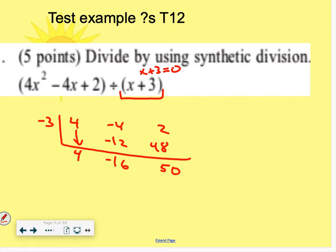And we get 50, which means when we divide these two, we get a remainder of 50. So negative 3 is not a 0. When you put negative 3 into this equation, you get 50, not 0.